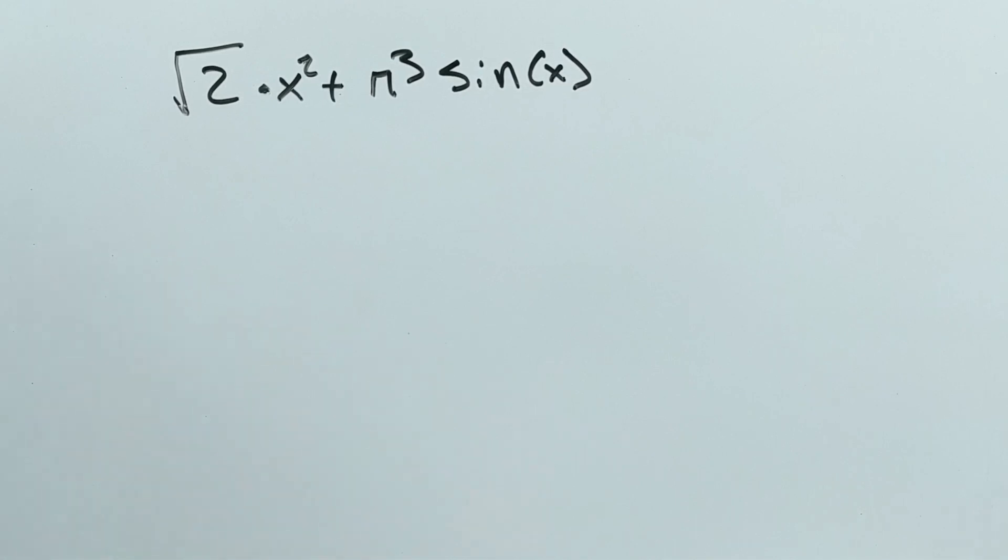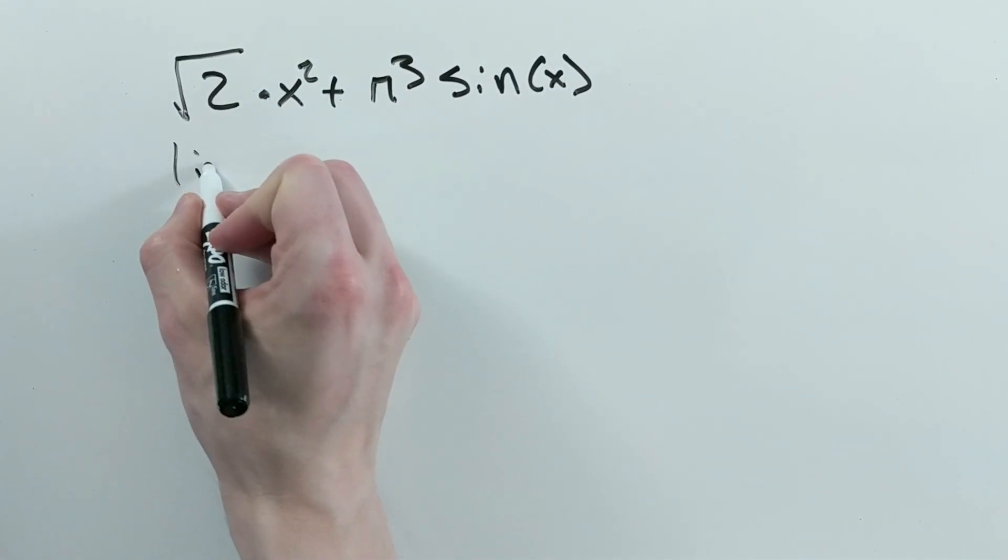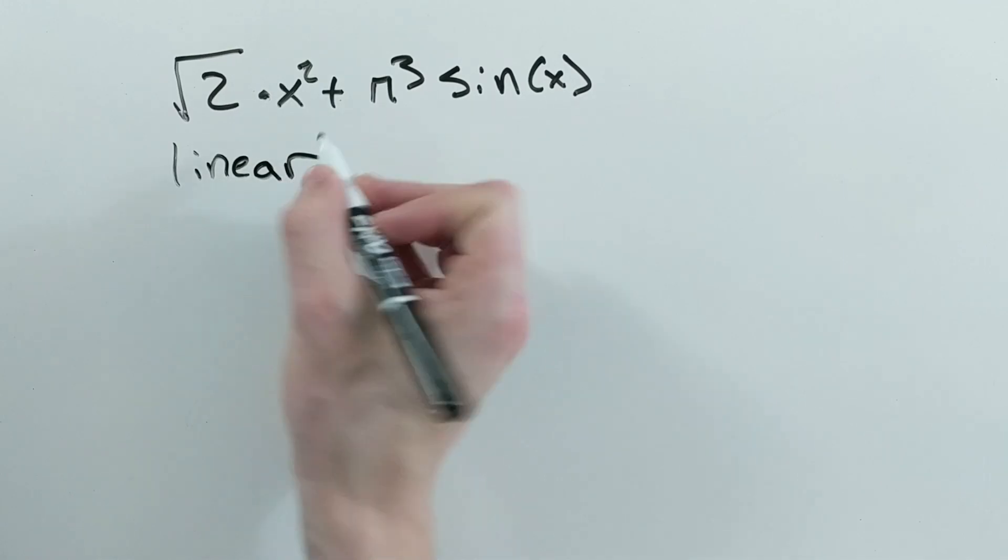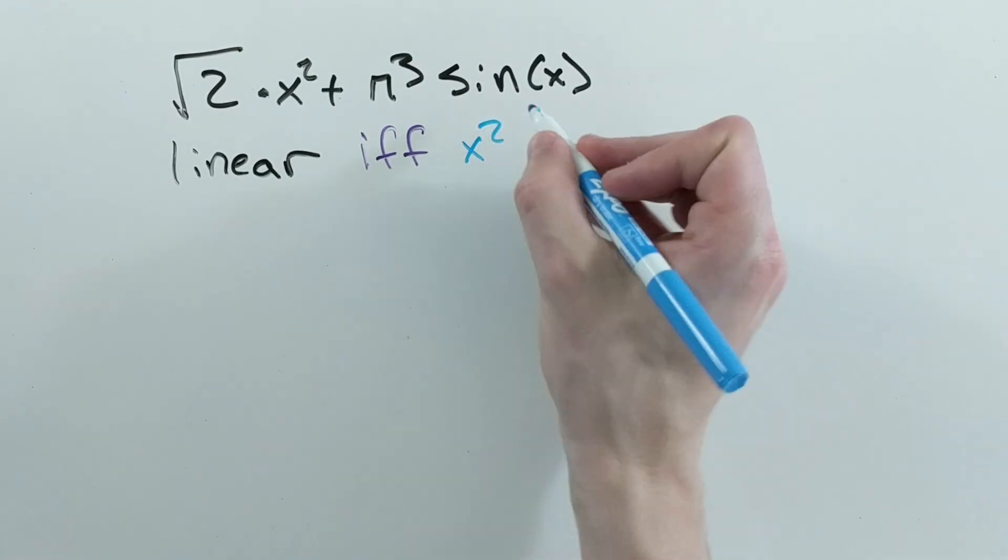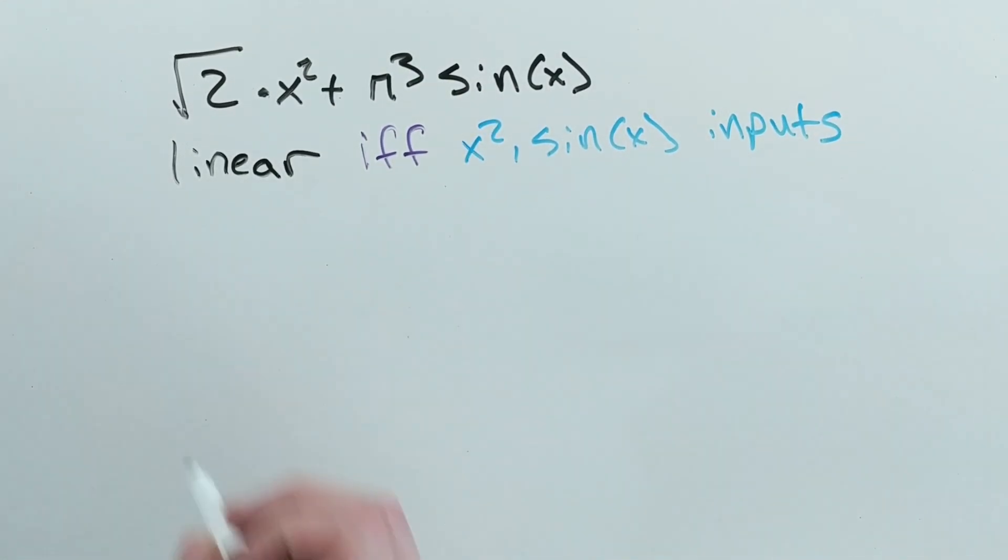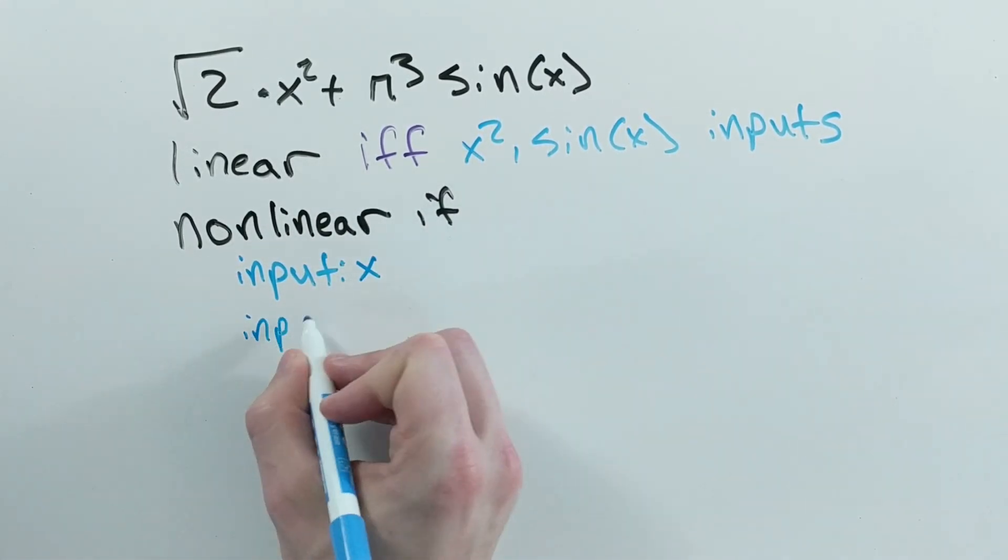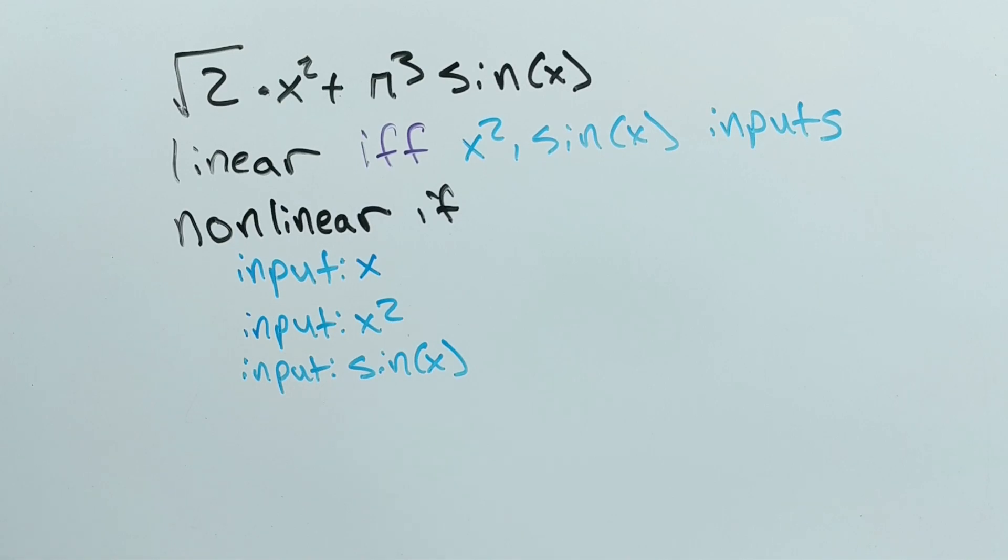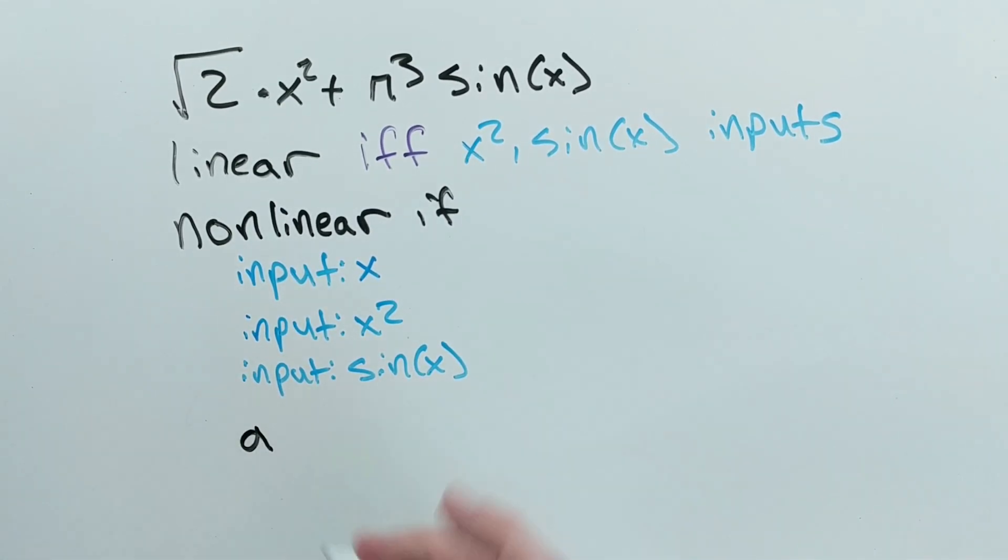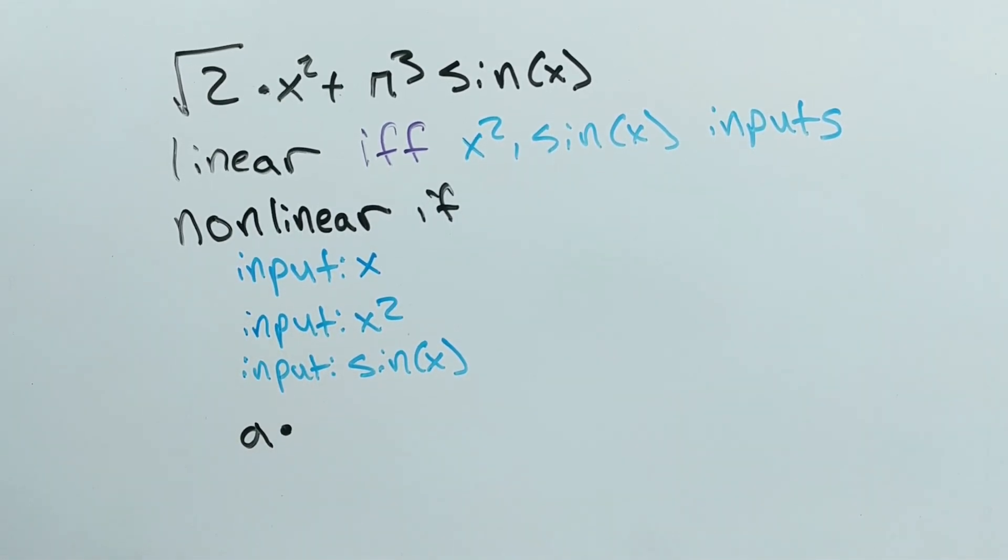Going back to the earlier example, that example is only linear if the inputs are x squared and sine x. If the input is x by itself, it's non-linear. If it's x squared by itself, it's non-linear. Or sine x by itself, it's non-linear. We know it's not a linear transformation because there's no way to take x squared and multiply it by some constant to get sine x or vice versa.